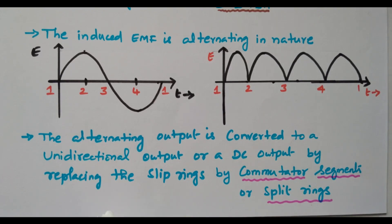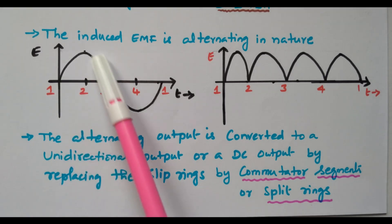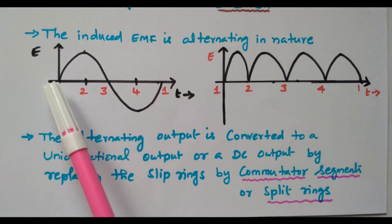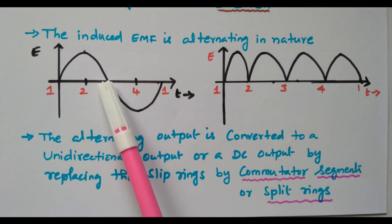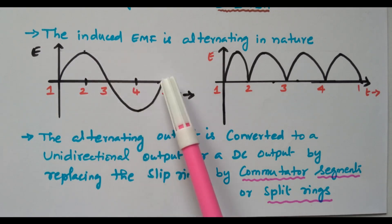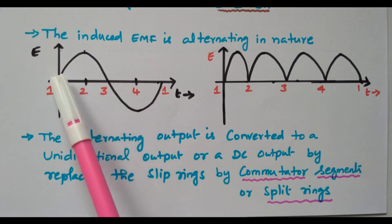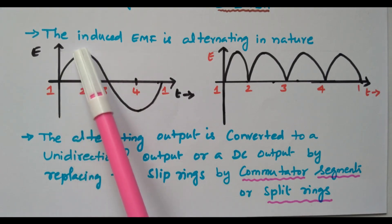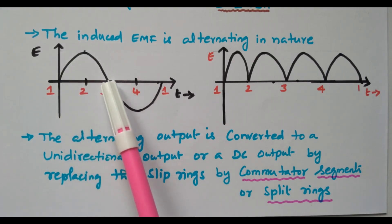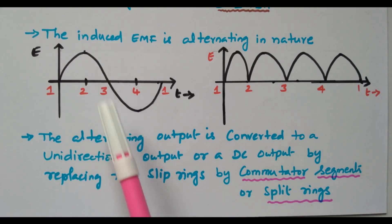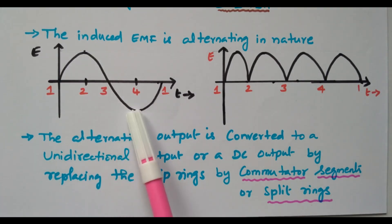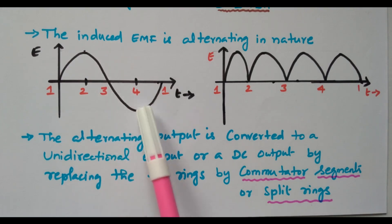In this video, we discussed the operation of a DC generator and how EMF is induced. At 0 degrees — minimum; 90 degrees — maximum, slowly increasing from 0 to maximum; 180 degrees — again minimum, decreasing from maximum; 270 degrees — maximum again, slowly increasing. Then the same cycle repeats. The EMF pattern keeps cycling between zero and maximum.